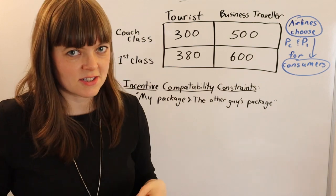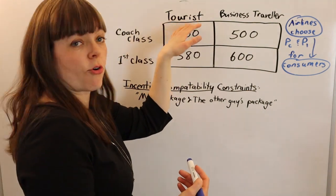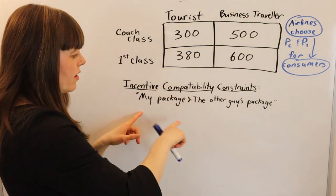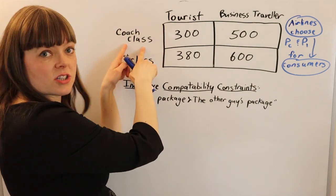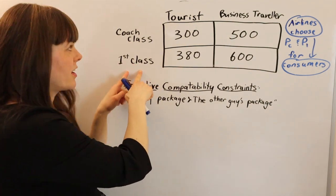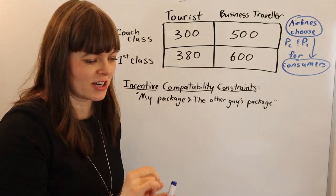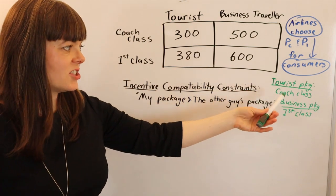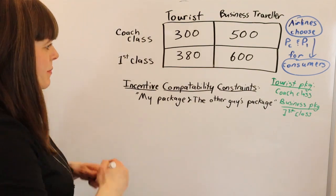The interpretation of these constraints is always from each of the different customer types' perspectives. We need to do this from the tourist's perspective and then separately from the business person's perspective. We're going to have some inequality that represents 'my package is preferred to the other package.' The tourist should prefer coach over first class, and the business traveler should prefer first class over coach. The tourist's package is the coach class ticket; the business traveler's package is the first class ticket.